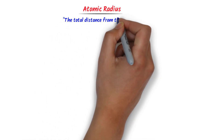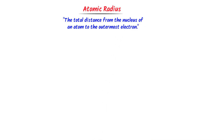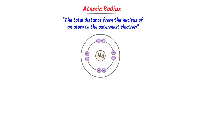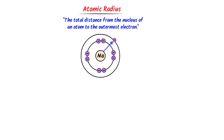Now we will learn the trends of atomic radius. We define atomic radius as the total distance from the nucleus of an atom to the outermost electron. For example, consider this atom — the distance from the nucleus to the outermost electron is known as atomic radius. Hence atomic radius is nothing but the size of an atom.